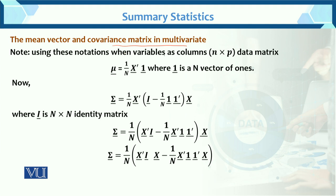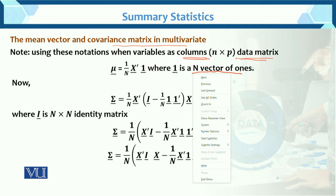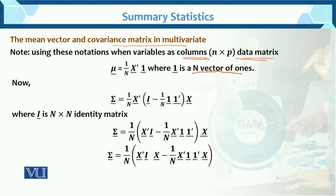Using these notations, when variables are as columns in an n×p data matrix, the mean vector mu equals 1 over n times x-vector transpose times 1, where 1 is an n×1 vector of ones — that is, a vector of 1s going up to n times. This is the notation for the mean vector.